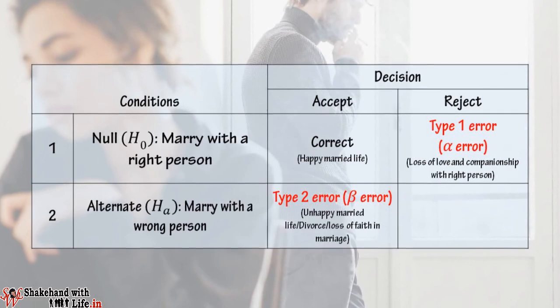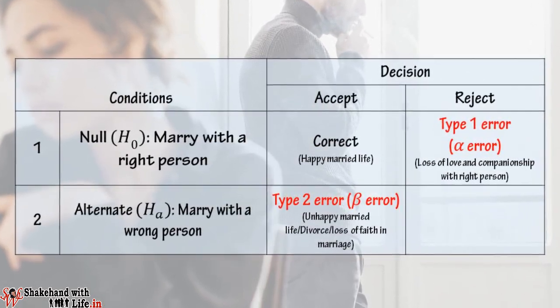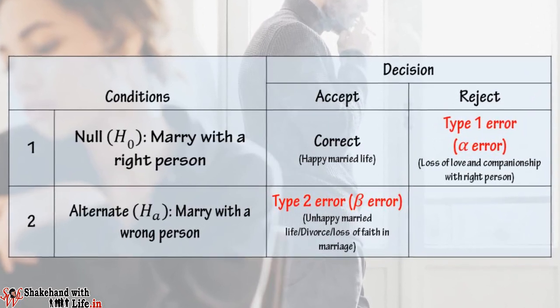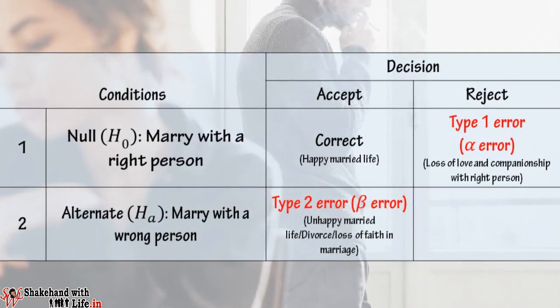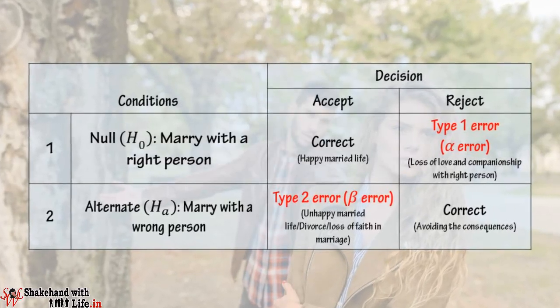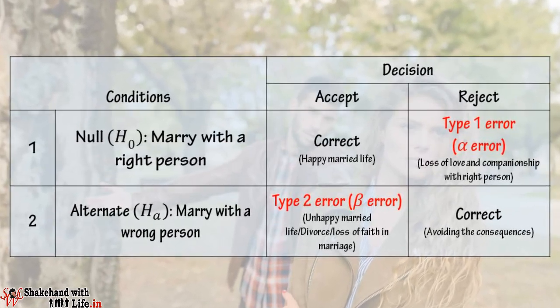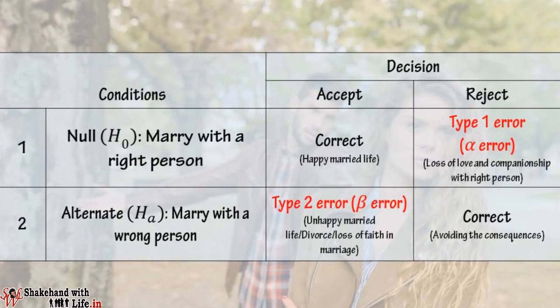Now the second condition: to marry with a wrong person, which is the alternative hypothesis. If you accepted to marry with a wrong person, then either you will lead an unhappy married life, or go for divorce, or you may lose faith in marriage. And if you rejected to marry with a wrong person, then this will be an absolutely correct decision, because you are avoiding all the consequences that could have ruined your personal life.